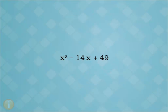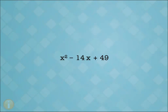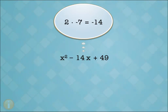Another example. Is it a perfect square? The leading coefficient is 1. The last term is the square of 7 and negative 7. Now we check the middle term. Is the coefficient 2 times one of these numbers? Yes, it's 2 times negative 7.